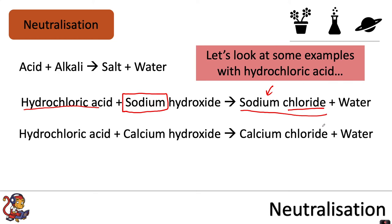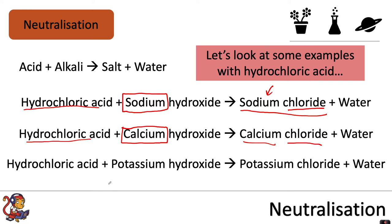Another example: hydrochloric acid plus calcium hydroxide makes calcium chloride plus water. We've still got a chloride because we're using hydrochloric acid, but this time the first part of the alkali is calcium, so we make calcium chloride. And finally, hydrochloric acid plus potassium hydroxide makes potassium chloride plus water.